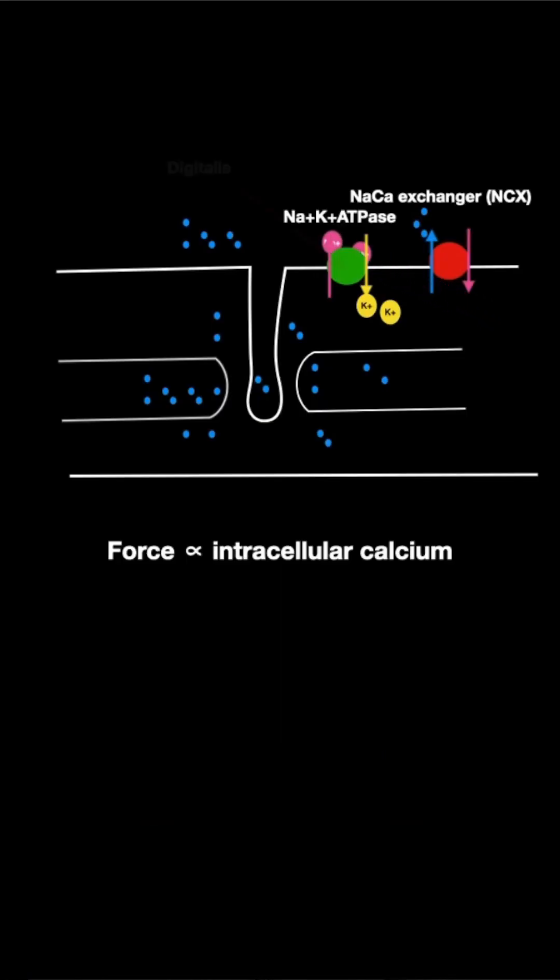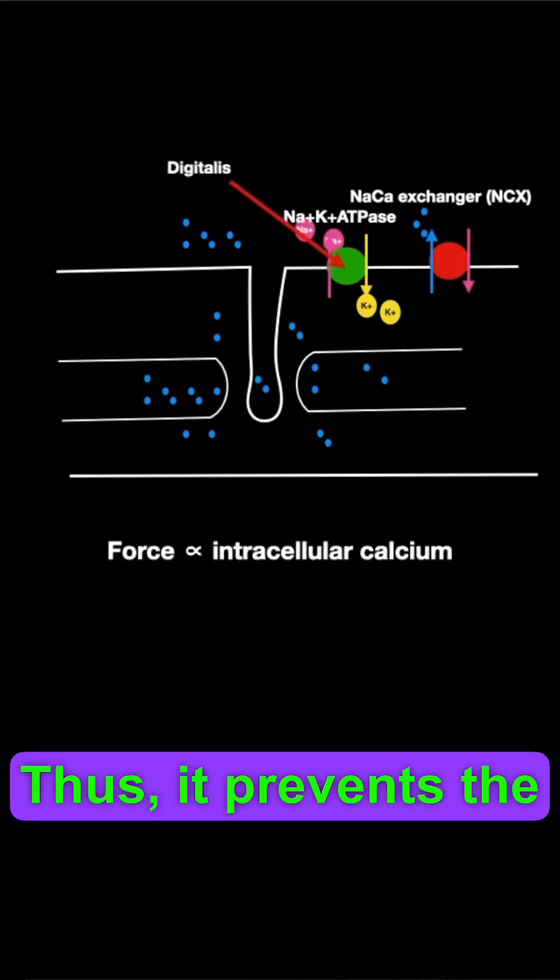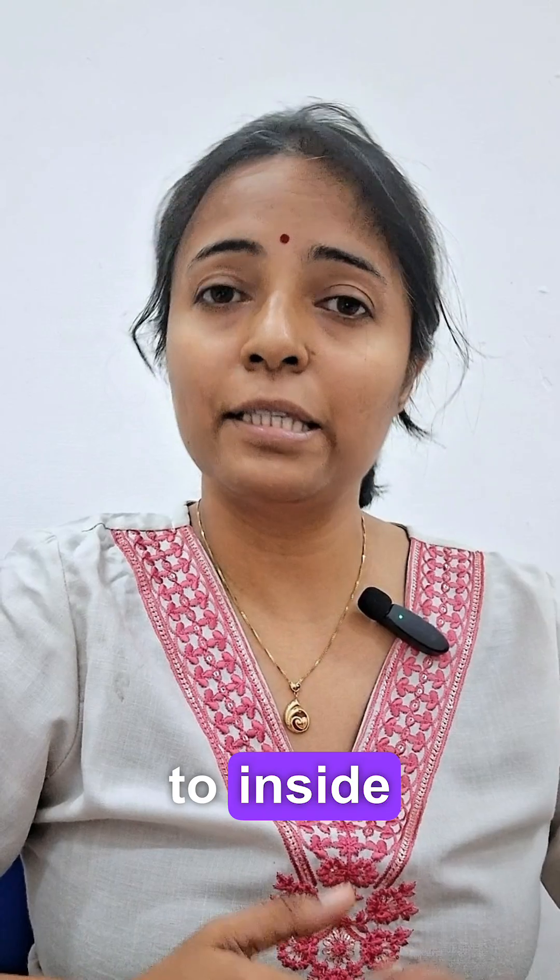Digitalis blocks sodium-potassium ATPase, thus it prevents the development of gradient for sodium ions from outside to inside.